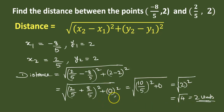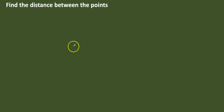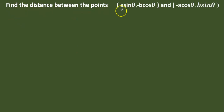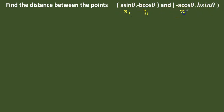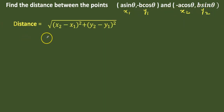Let us go to another question. Find the distance between the points A sin theta minus B cos theta comma minus A cos theta comma B sin theta. Here the first set of coordinates will be x1 and y1, and the second set is x2 and y2. Distance is equal to square root of x2 minus x1 the whole square plus y2 minus y1 the whole square.